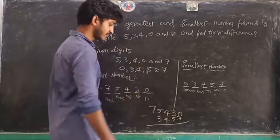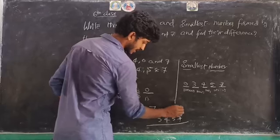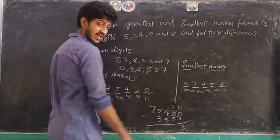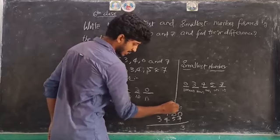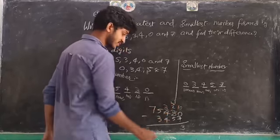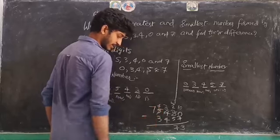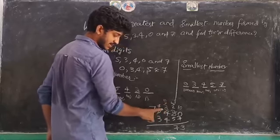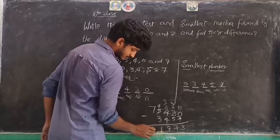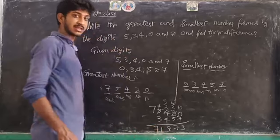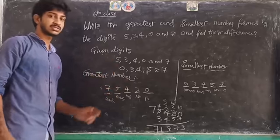0 minus 7 is difficult, so I take a borrow — it becomes 2, and 10 here. 10 minus 7 equals 3. 2 minus 5 is difficult, so I take a borrow — it becomes 3, and 10 plus 2 equals 12. 12 minus 5 equals 7. 3 minus 4 is difficult, so I take a borrow — it becomes 4, and 10 plus 3 equals 13. 13 minus 4 equals 9. 4 minus 3 equals 1. And 7. The difference is 71,973.